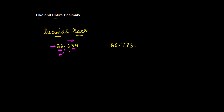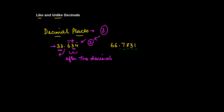When you count how many digits are there after the decimal point, that is known as the decimal places. So if you count in 33.634, you have 6, 3, and 4 — there are three digits after the decimal point, so we say there are three decimal places. Now if I look at the second number 66.7831, after the decimal point I have 1, 2, 3, 4 — there are four digits, so this number has four decimal places.